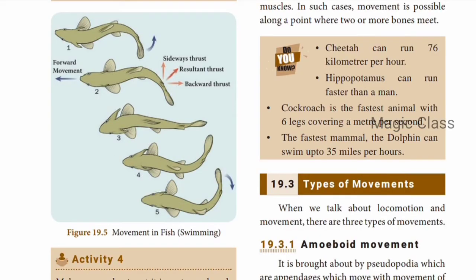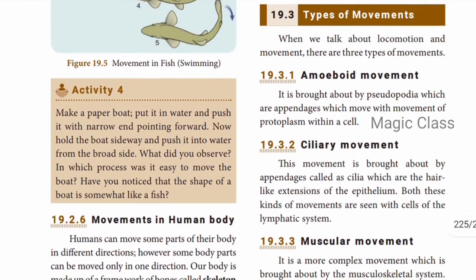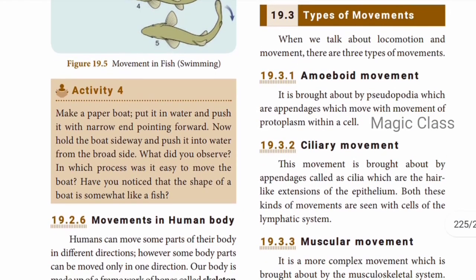Did you know? A cheetah can run up to 76 km per hour. The cockroach is the fastest animal with six legs, covering a meter per second. The fastest aquatic mammal, the dolphin, can swim up to 35 miles per hour. The final topic in this video is types of movements.